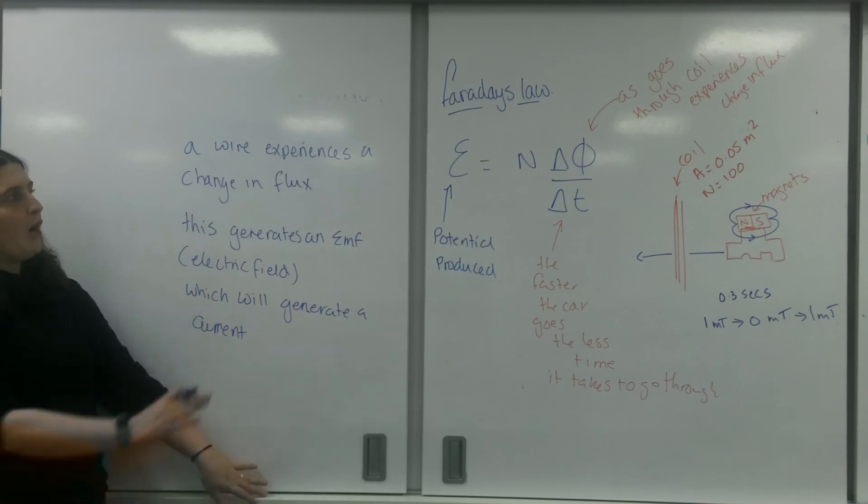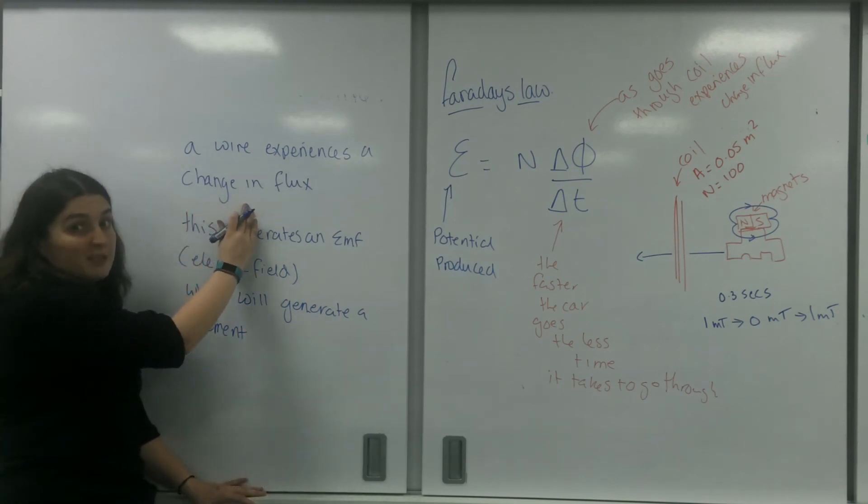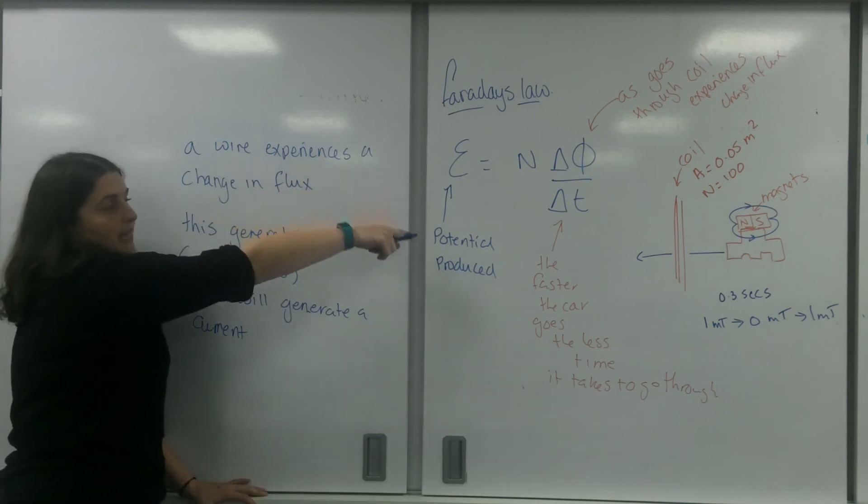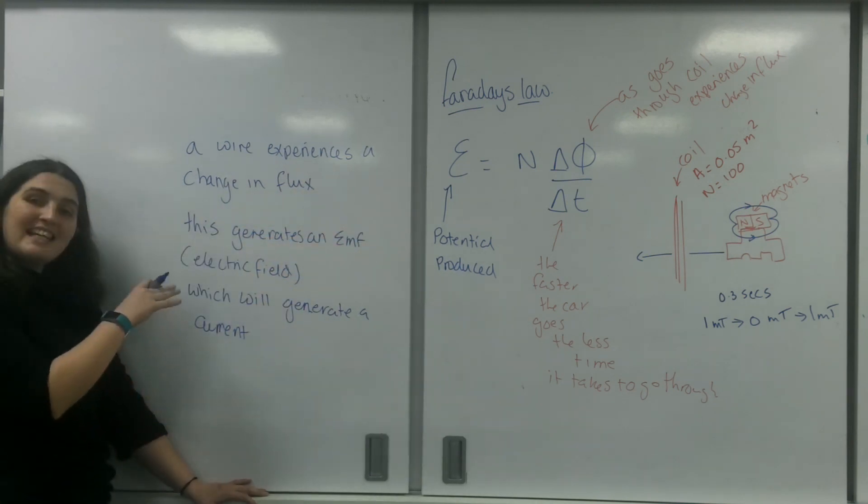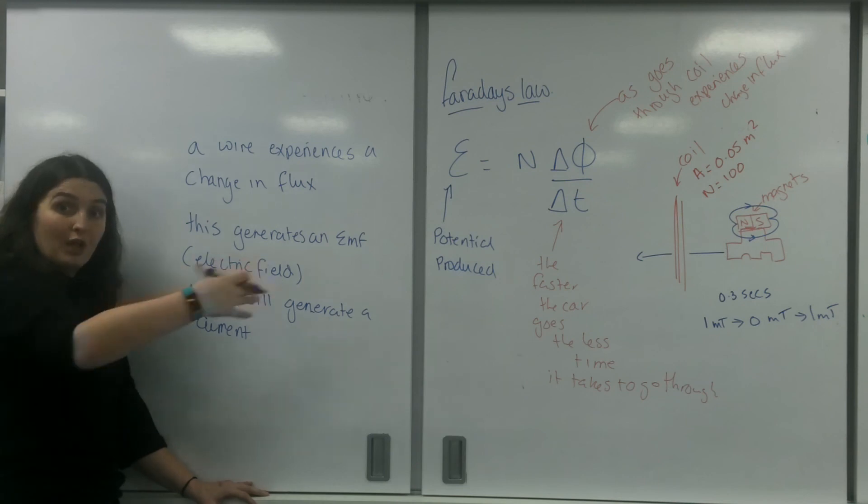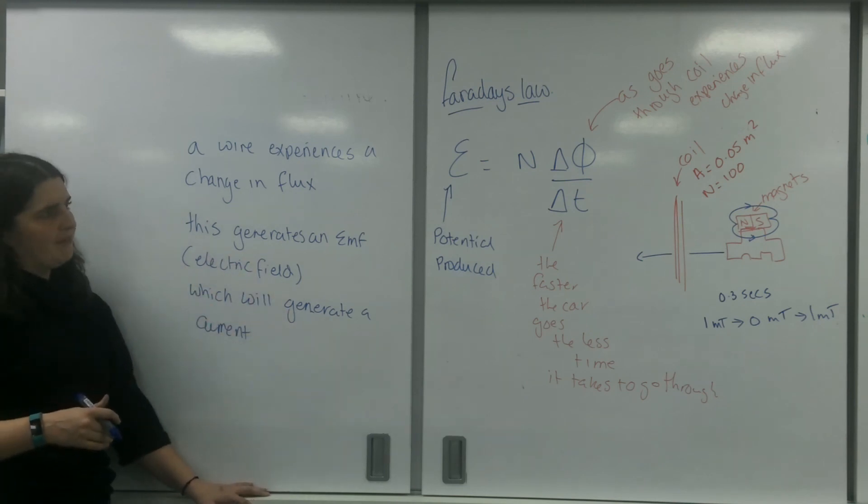So Faraday's law is all about a wire or a piece of material experiencing a change in flux. This generates an EMF, this letter here, potential. This electric field that is made will generate a current because electrons in that material will start flowing towards the positive or the negative.